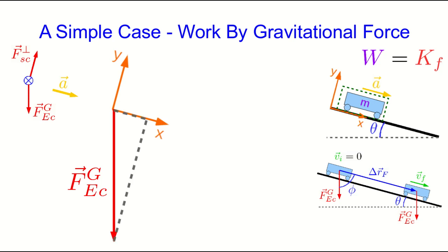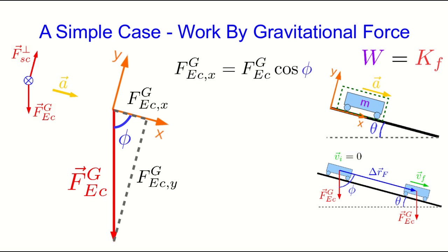I'm going to decompose the gravitational force into its components parallel and perpendicular to the slope, working in terms of angle phi. Dropping perpendiculars and labeling the x and y components, the x component is adjacent to angle phi. So we can say it is just the magnitude of the gravitational force times cos phi, or in other words mg cos phi — and with my choice of axes, that's positive.